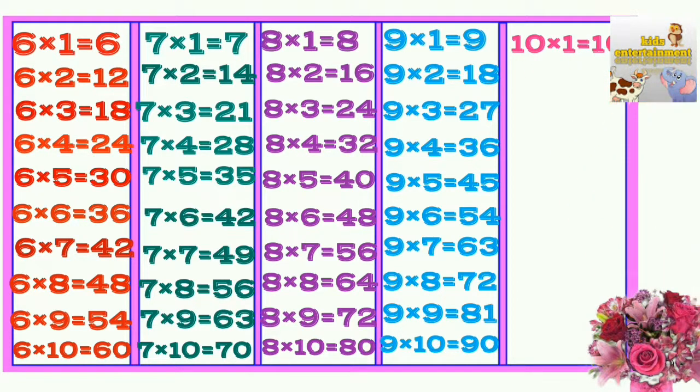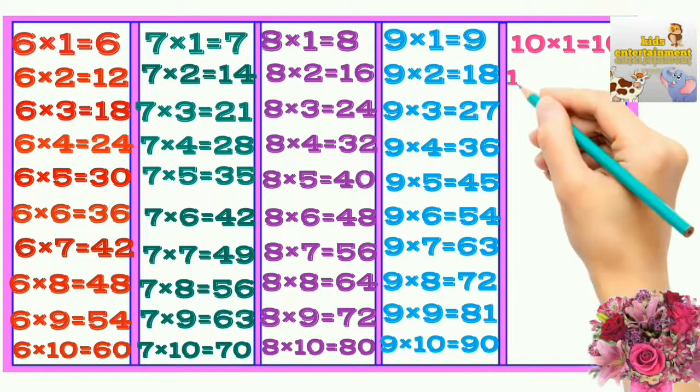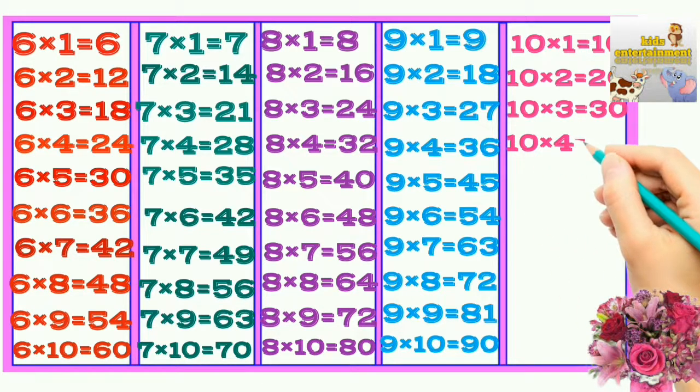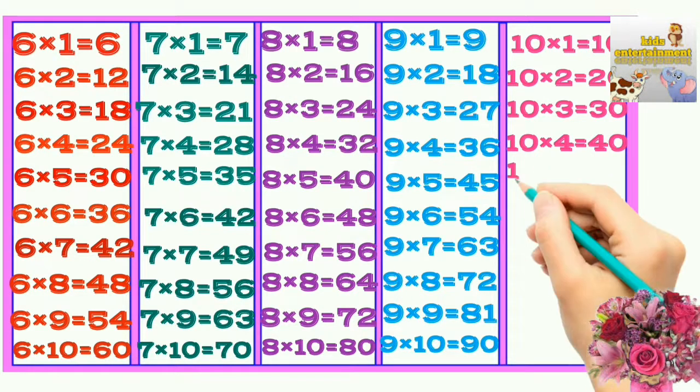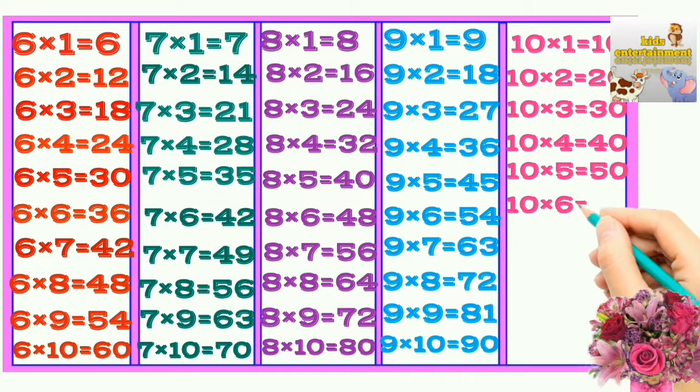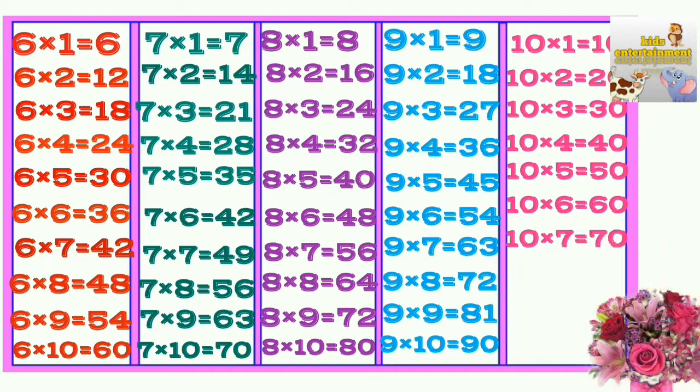10×1=10, 10×2=20, 10×3=30, 10×4=40, 10×5=50, 10×6=60, 10×7=70, 10×8=80, 10×9=90, 10×10=100.